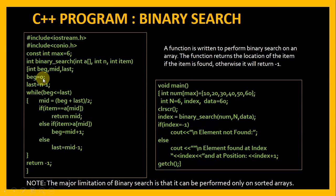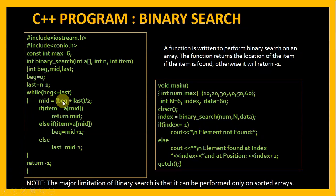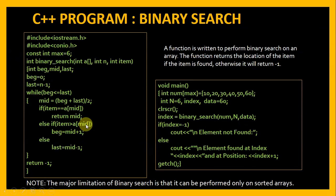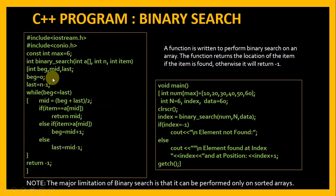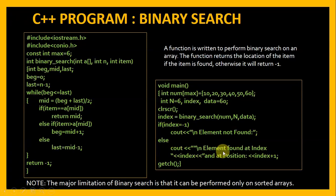We declare three variables: beginning, mid, and last. Beginning is initialized to 0 and last to n minus 1. The loop executes as long as beginning is less than or equal to last. Each iteration calculates mid as (beginning + last) / 2 — this is integer division. If the item is found at index mid, we return mid. If the item is greater than a[mid], we make beginning equal to mid plus 1. Otherwise we make last equal to mid minus 1. We return minus one if the loop completes without finding the element. If index is minus one, the element is not found; otherwise we display the element is found at that index. Binary search must be performed only on sorted arrays.